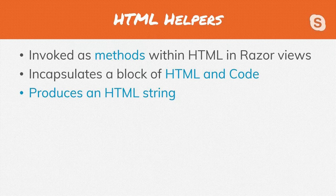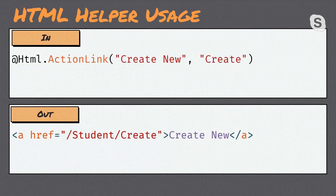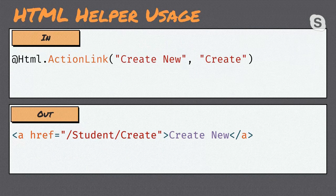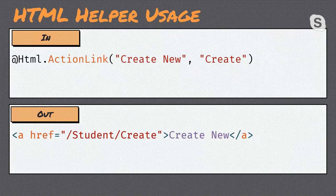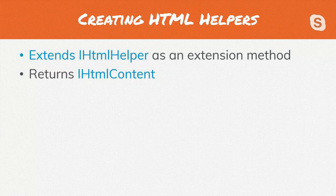HTML helpers are the component model for Razor views. They're invoked as methods within HTML Razor views and encapsulate code and HTML — essentially building components. At the end of the day these things turn into an HTML string, and that's really important to remember. This is what an HTML helper looks like in a Razor view: we call at-html which identifies we're invoking a helper, then call the extension method on the HTML class. In this case we're doing an action link, producing a nice anchor tag with the specified path.